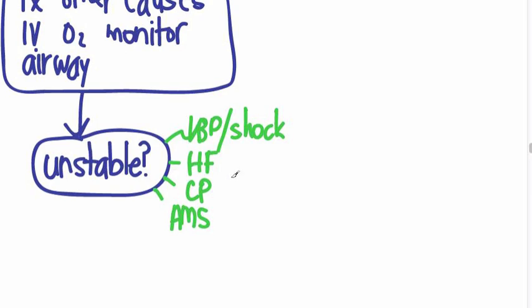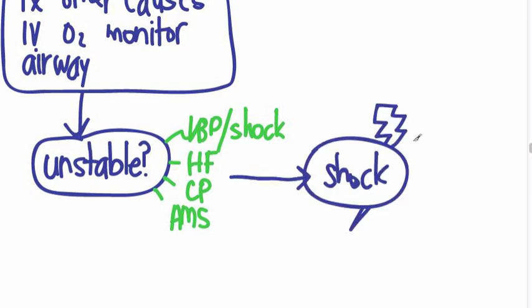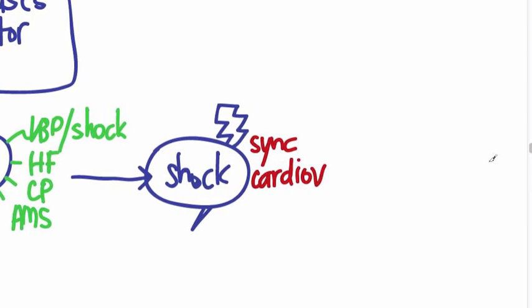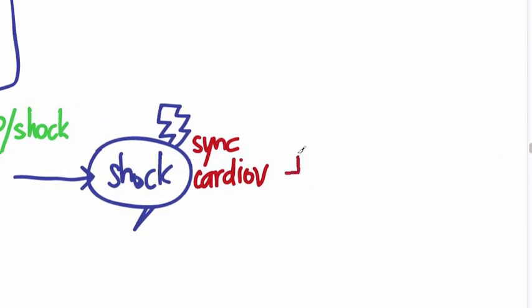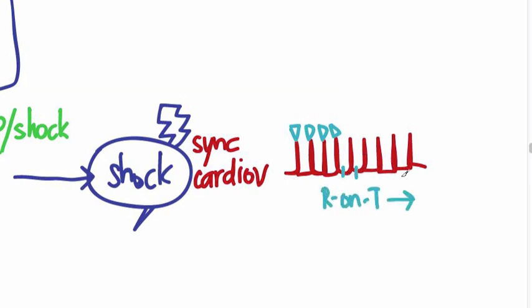Now if a patient is unstable, then you need to shock them, and what this means here is synchronized cardioversion. You might be asking what is synchronized cardioversion and how does it differ from defibrillation. Let's say this is the rhythm you have here, it's tachycardic. What you want to do then is deliver the shock on one of these R waves and not here on a T wave. If you put it on T, you're going to get this R-on-T phenomenon and you'll get a refractory V-fib.